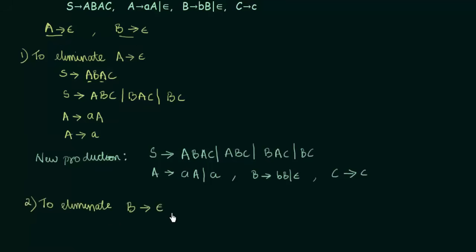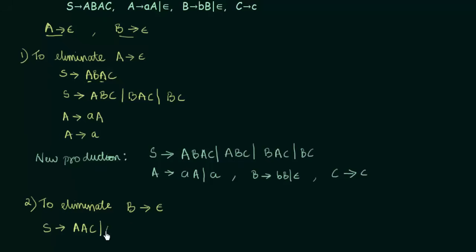To eliminate B gives epsilon, we check the new production set for all places where B appears on the right side. B appears in S and in B's own productions; A has no B's. For S gives ABAC, replacing B with epsilon gives AAC. From ABC, replacing B gives AC. From BAC, replacing B gives AC — already there, so no need to write again. From BC, replacing B gives just C.